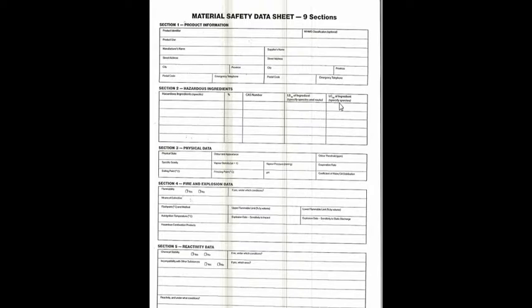Section 2 — the hazardous ingredients — has everything specific. If you have it, put it down. Whichever sections you have, you're going to fill it out: the CAS number, the ingredient name, the LD50 ingredients for specific species.